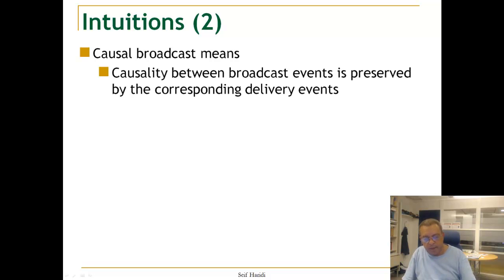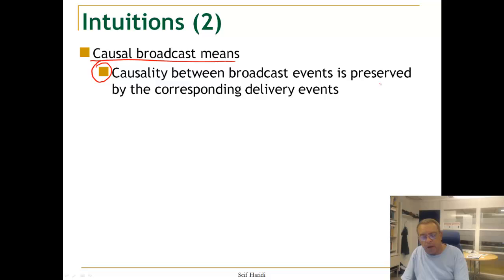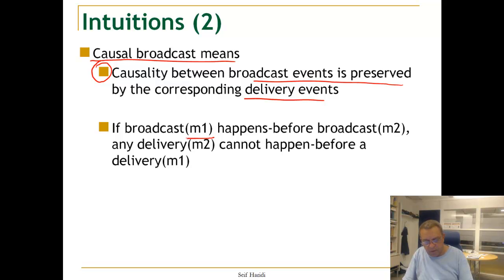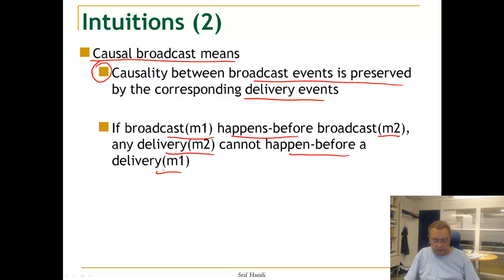What we want is causal broadcast. By causal broadcast we mean causality between broadcast events is preserved by the corresponding delivery events. This means we look at the happened-before relation between broadcast events: if one broadcast happened before another, then delivery of the first broadcast's message will also happen before delivery of the second broadcast's message on all processes. So if broadcast of M1 happens before broadcast of M2, then delivery of M2 cannot happen before delivery of M1.